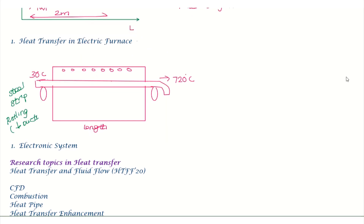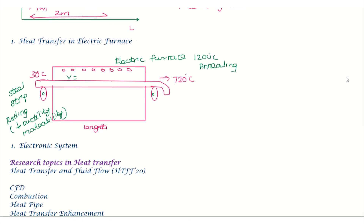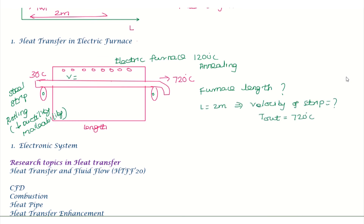Next example: heat transfer in an electric furnace. In the rolling process, ductility and malleability are reduced, so an annealing process is used. We use an electric furnace where the steel strip enters at around 30 degrees Celsius, passes through rollers, and must reach 720 degrees Celsius. The length of the electric furnace is designed based on this required temperature rise.